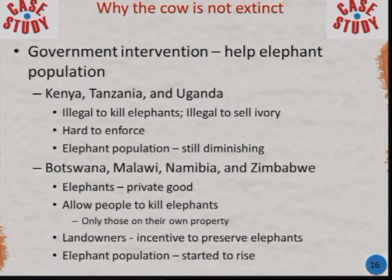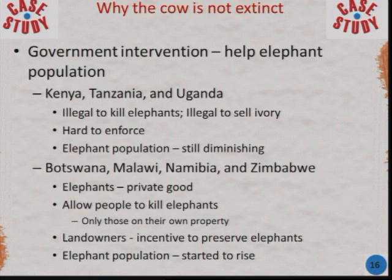That's why the cow isn't an endangered species. To help elephant populations, some countries have actually turned elephants into a private good — you are allowed to kill elephants on your own property only, not on someone else's property. This approach has actually helped the elephant population recover.